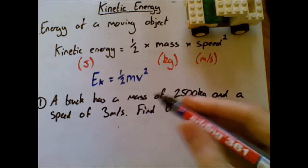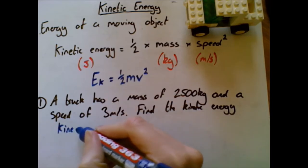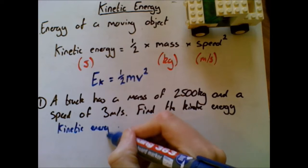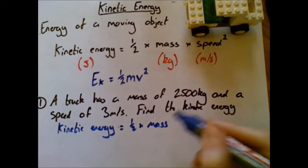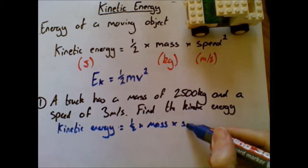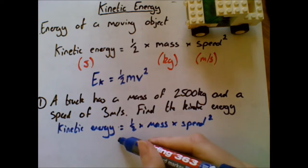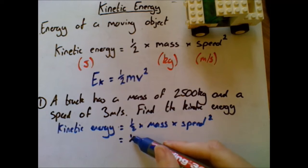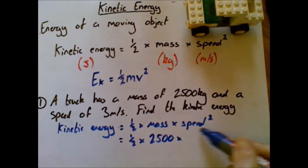So first step, you know by now what the first step is - it's going to be to write out the formula. Now I know it's a lot to write out every time. You can do it in symbols if you want to, but it just means that you're less likely to make mistakes and it's really clear to the people marking your exams what you are doing. So half times mass times speed squared.